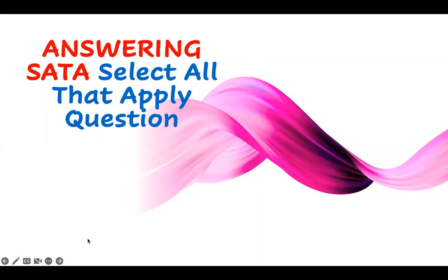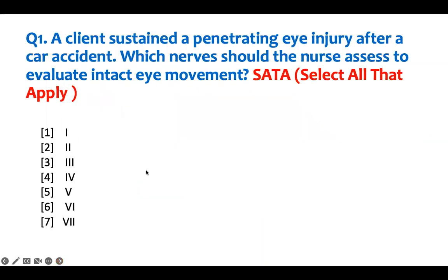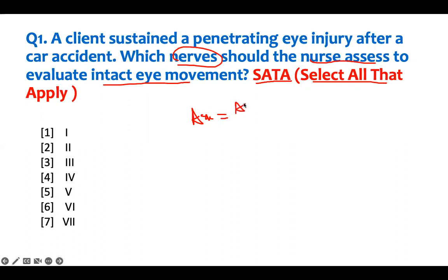Let's get to a straightforward question and how to answer it. This is a new question. The way we answer select-all-that-apply questions is to read the question from the back. So for this question, what is being asked? You are asked which nerve should the nurse assess to evaluate intact eye movement — so an assessment to show intact eye movement.